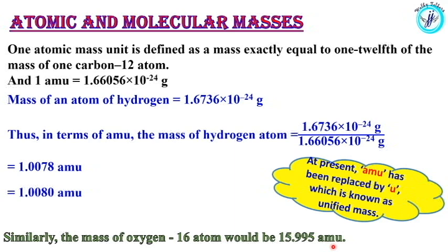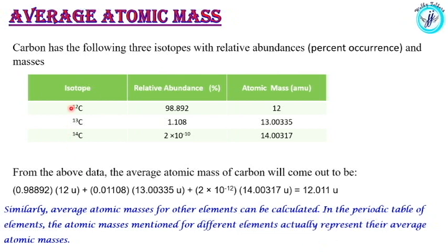Now we go to average atomic mass. Carbon has isotopes: carbon-12, carbon-13, and carbon-14. Carbon-12 is 98.892%, carbon-13 is 1.108%, and carbon-14 is 2 × 10⁻¹⁰%. Their respective masses are: carbon-12 is 12u, carbon-13 is 1.00335u, and carbon-14 is 1.00317u.